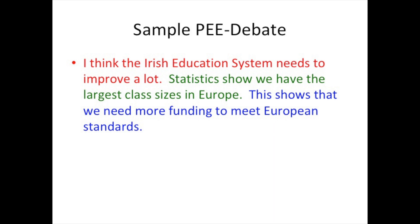Here is another sample PEE, this time from a debate. The point is: I think the Irish education system needs to improve a lot. The example is: statistics show we have the largest class sizes in Europe. And the explanation is: this shows that we need more funding to meet European standards.